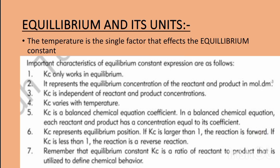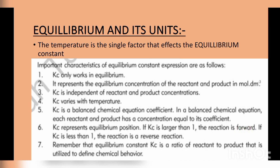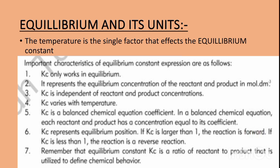We will have two values for Kc — one that we calculate and one given in the question. We consider both values and then determine the direction of the reaction. If Kc is larger than one, the reaction is forward and we will have more product. If Kc is less than one, the reaction is reverse and we will have more reactants.